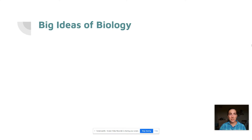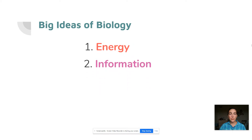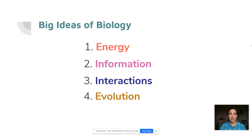We're going to start today by talking about the four main themes that run through all of biology. All of biology is kind of organized around these four main concepts: energy, information, interactions, and evolution. These are themes that are going to come up in every single unit that we do throughout the entire year, and you're going to see these in many different ways.